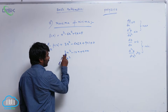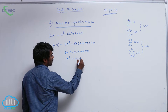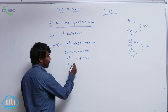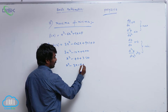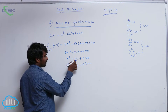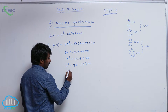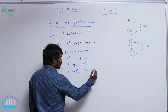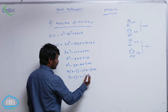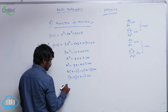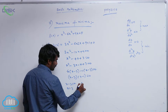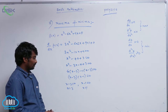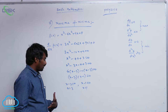I can take 3 common, giving x square minus 4x plus 3 equal to 0. From quadratic equations, x square minus 4x can be written as minus 3x minus x plus 3 equal to 0, using product and sum of roots. Taking x common gives x minus 3, taking minus 1 common gives x minus 3 equal to 0. Taking x minus 3 common, we get x minus 1 equal to 0. So either x minus 3 equal to 0, giving x equal to 3, or x minus 1 equal to 0, giving x equal to 1.